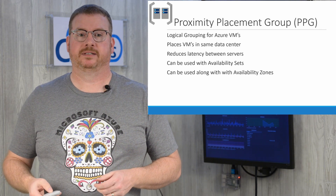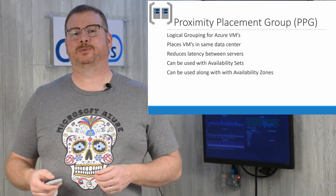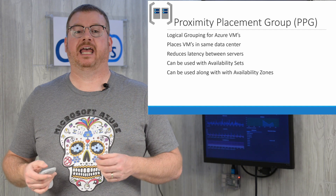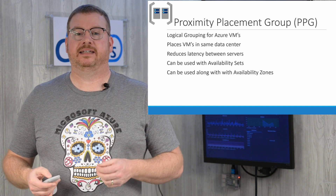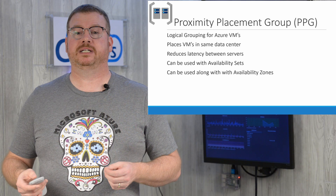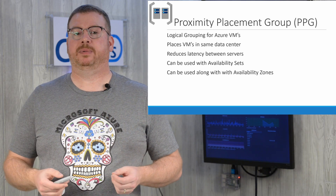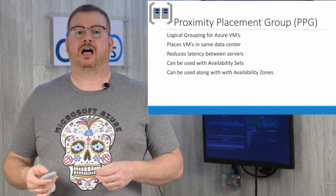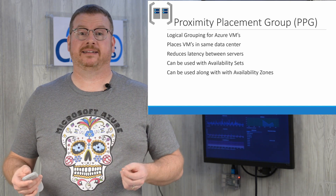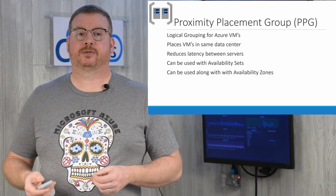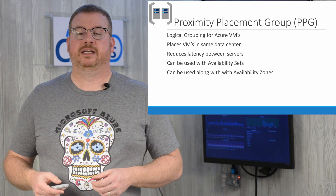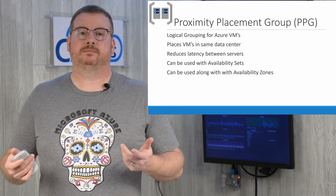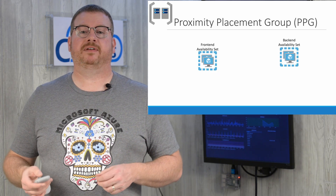Although the latency has minimal impact for many applications, some applications are highly sensitive to network latency, and keeping all servers and applications together will increase performance and reliability. Using proximity placement groups will deploy servers to the same data center, thereby lowering network latency. A proximity group can be used with availability sets and availability zones, but it can't span zones — keep in mind that an availability zone intentionally spreads servers across multiple data centers in a region to protect against a data center failure.